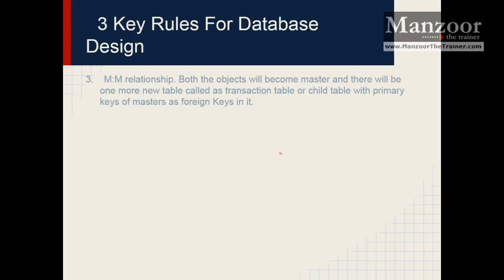The third rule is for a many-to-many relationship. In a many-to-many relationship, both objects will become master tables, and there will be one additional table called a transaction table or child table, with the primary keys of both masters acting as foreign keys in it.